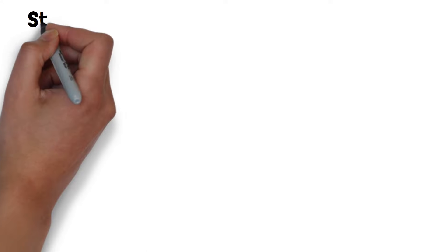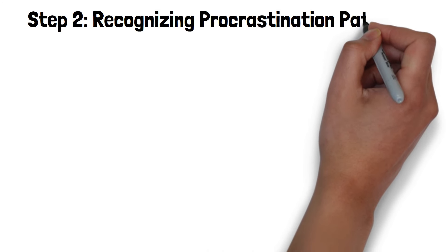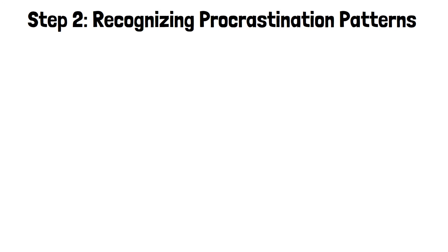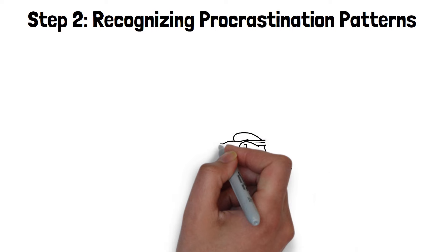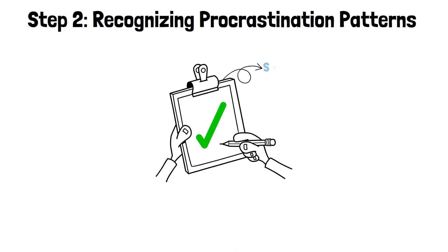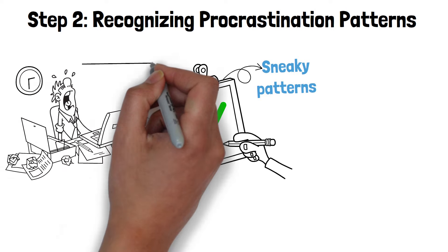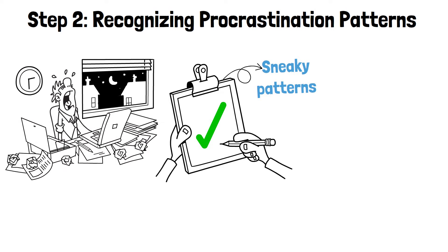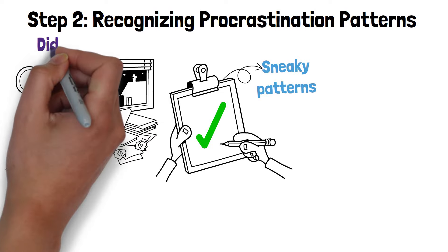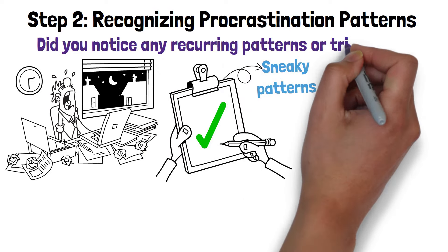Step 2. Recognizing procrastination patterns. Procrastination often disguises itself in different forms, making it crucial to recognize its sneaky patterns before we tackle them head on. Take a moment to reflect on your recent procrastination episodes. What tasks did you avoid, and why? Did you notice any reoccurring patterns or triggers?